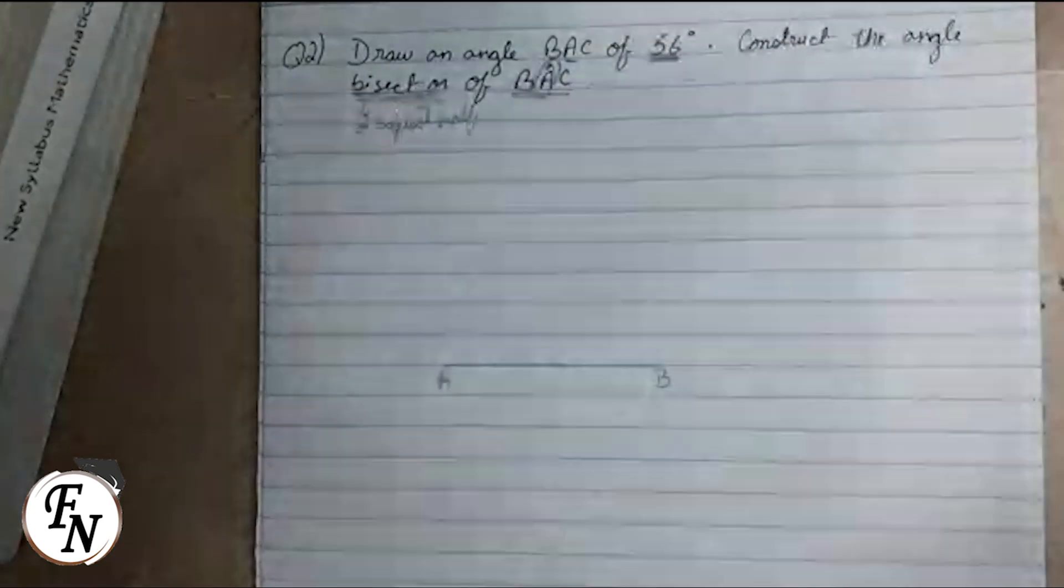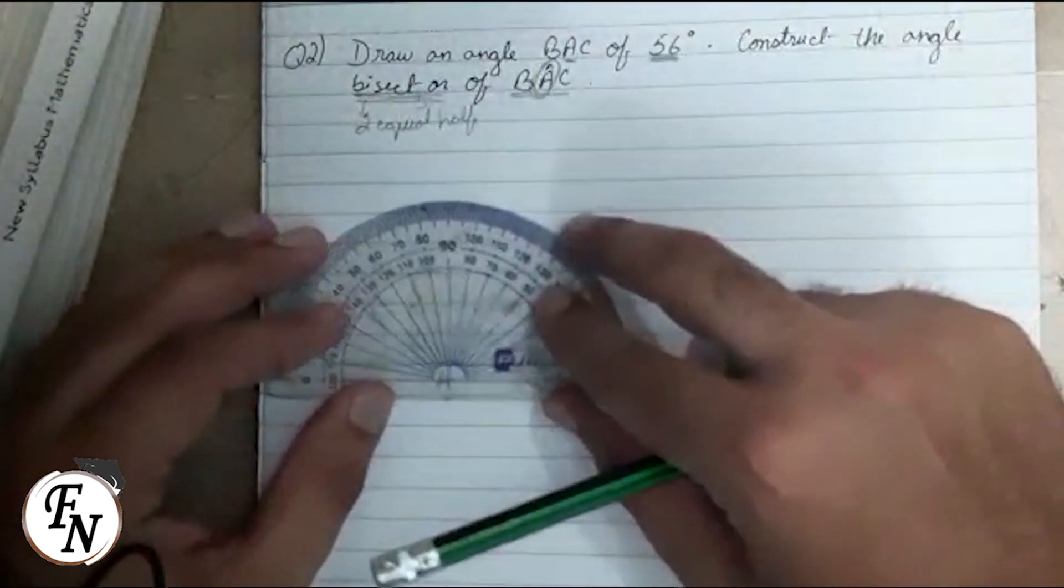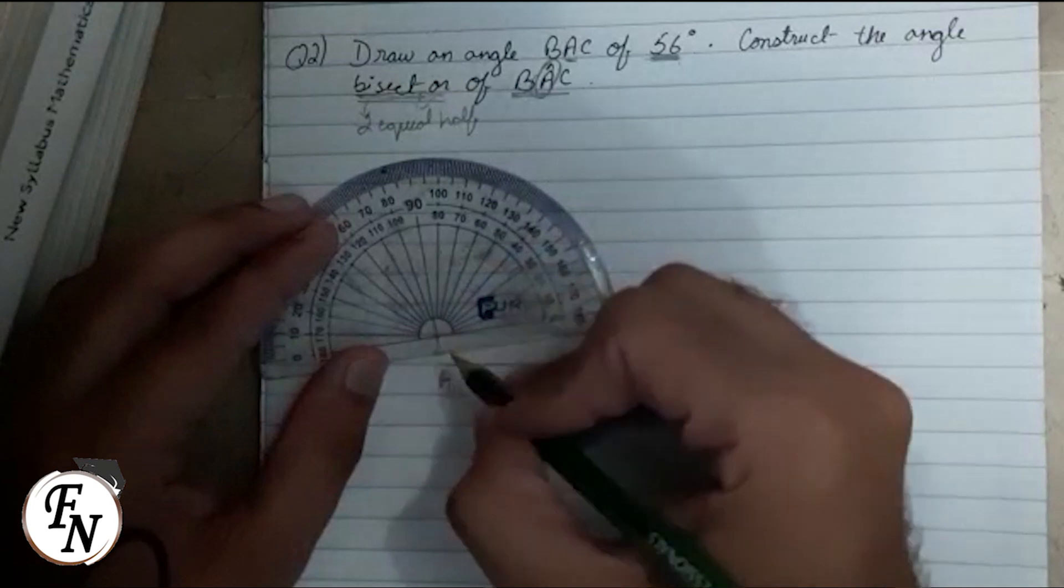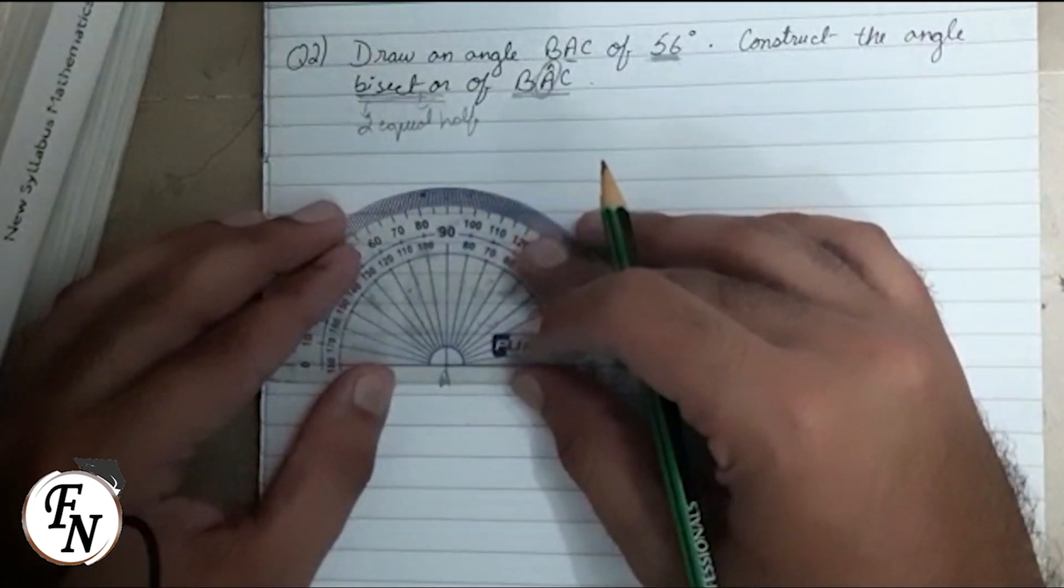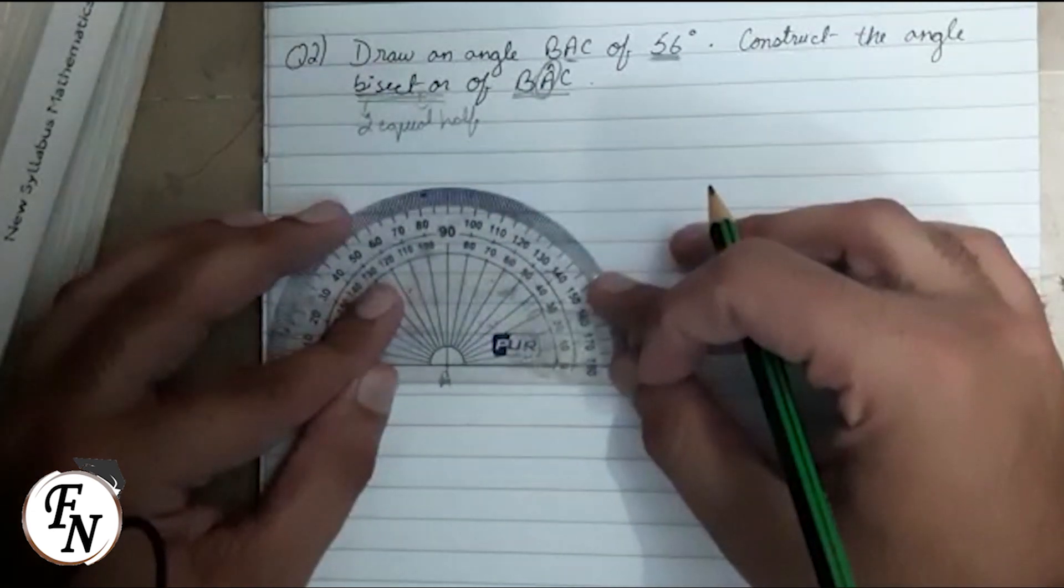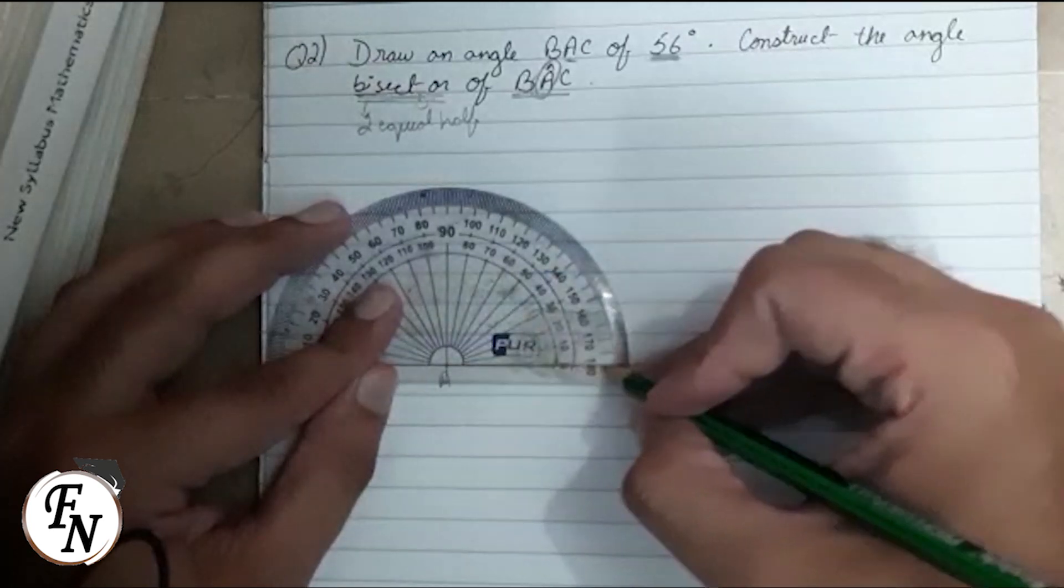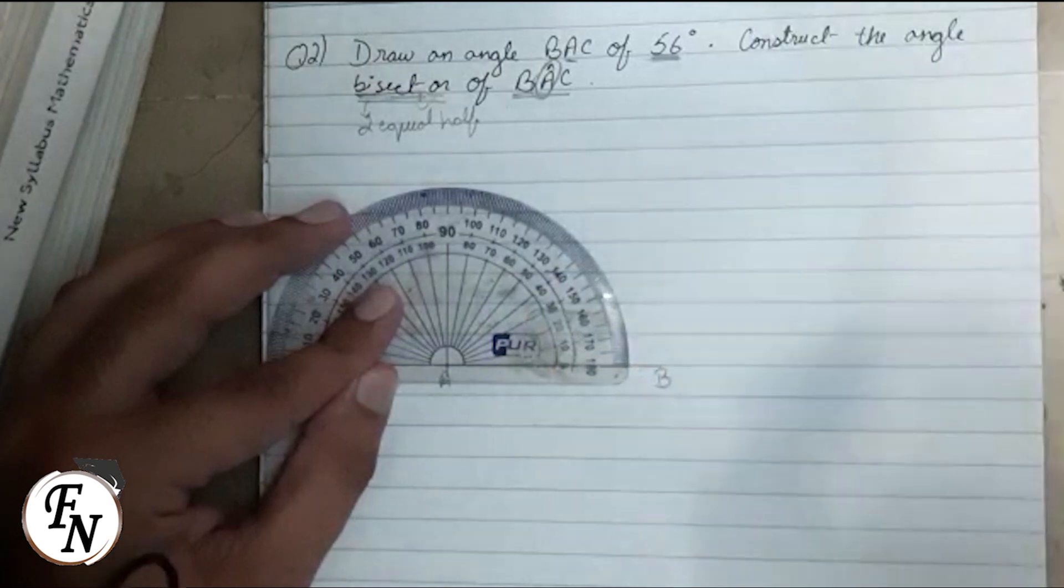We will place our protractor at point A. We will keep this cross at point A and then we will straighten this line at the base line, zero and 180, to this line AB.